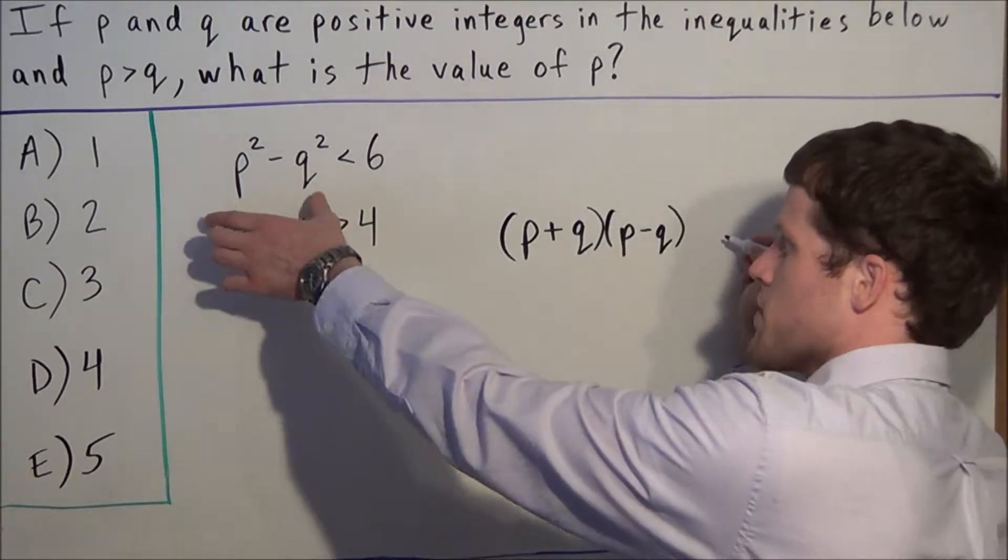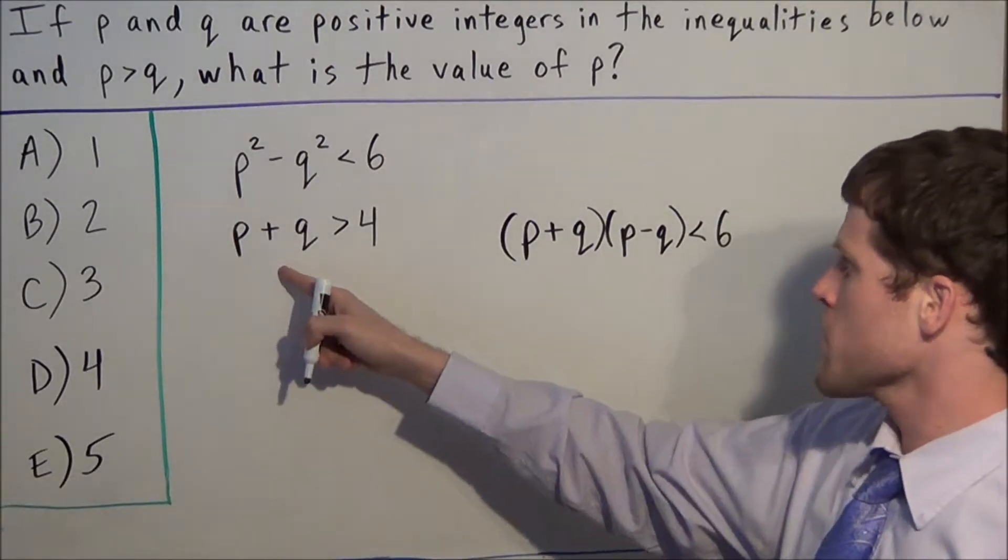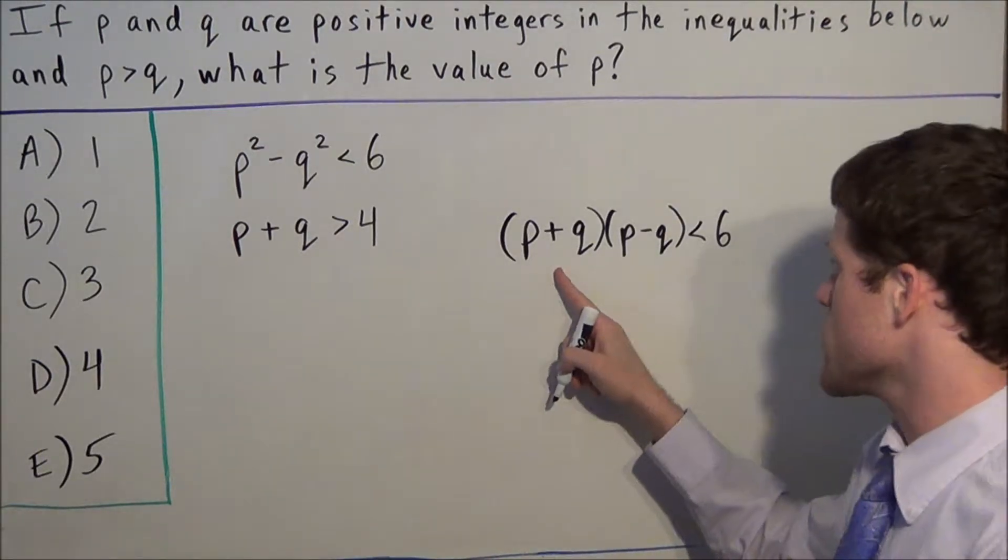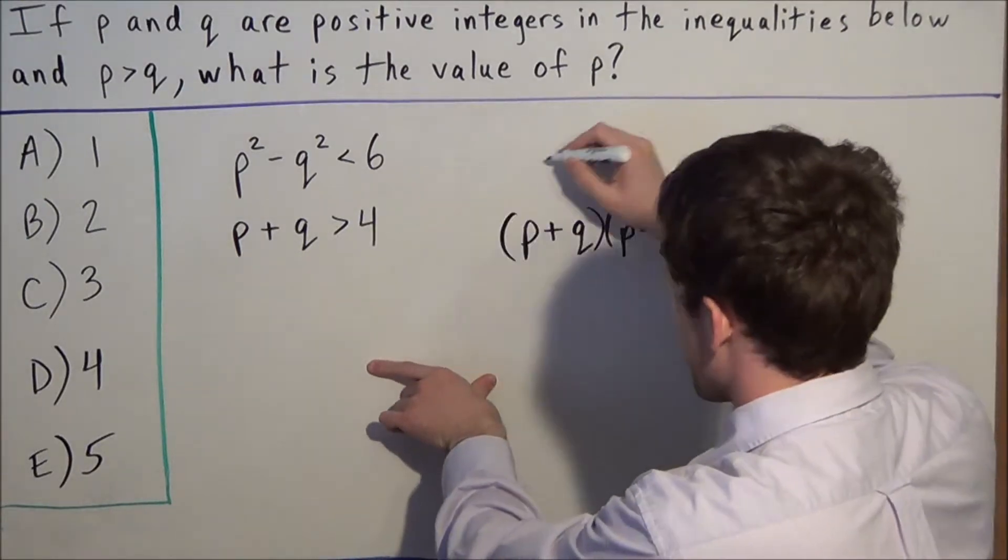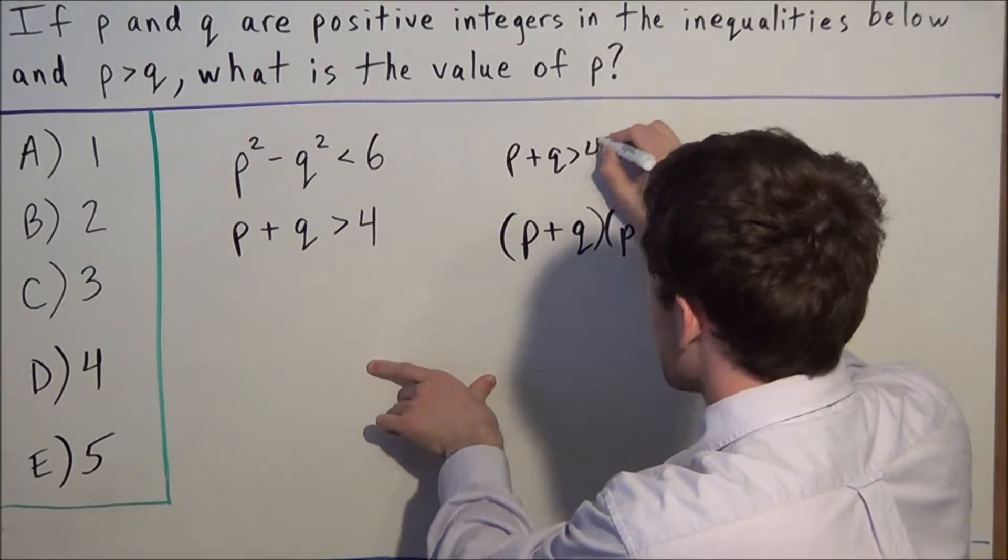We know this expression has to be less than 6. And p + q is greater than 4, which matches one of the factors. So we can write that p + q > 4.